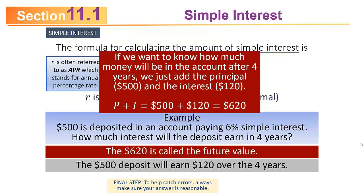As always, when you're doing these calculations, your final step should always be trying to see if your answer seems fairly reasonable. If you take $500 and put it away for four years at a pretty good interest rate, does it seem reasonable that you might end up with $620? Yes. If the answer came out to be $6,200, that's probably a mistake. Always think about that when you do a calculation to see if your answer seems reasonable — if it doesn't, you can probably find and fix your error.